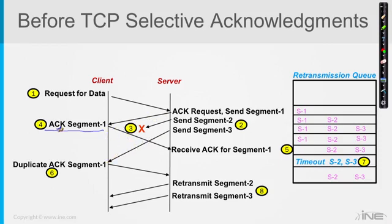TCP will say: for segment one, I'm going to create an acknowledgement for that. There goes the acknowledgement, acknowledging all the bytes in that segment. In step number five, the sender says: I can remove segment one from the retransmission queue — it was acknowledged. Segment two and segment three, though, are still in there; they have not been acknowledged yet.